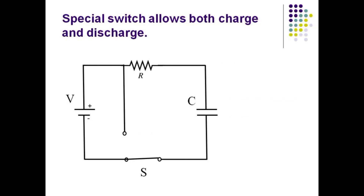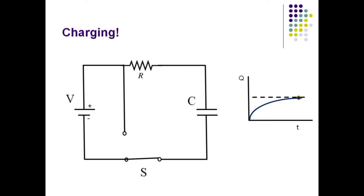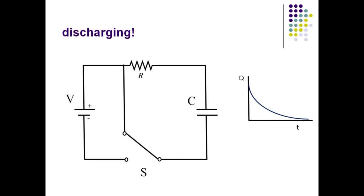In practice, it is possible to use a special switch to flip easily from a charging capacitor to a discharging capacitor. In this position, the switch allows the capacitor to charge. Thrown to this position, the switch allows the capacitor to discharge through the resistor.